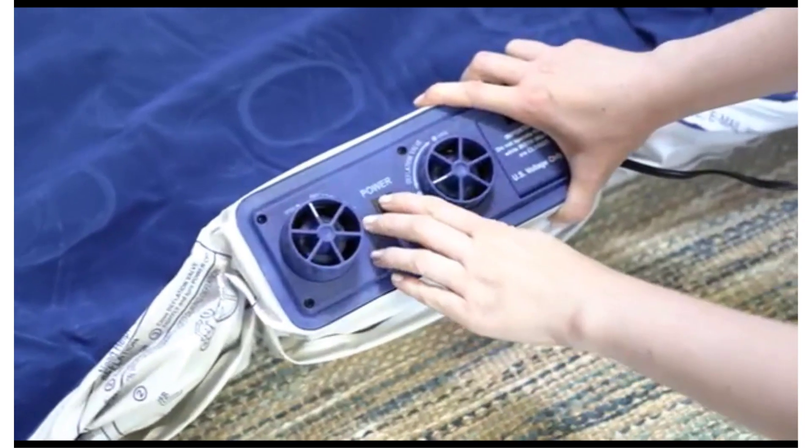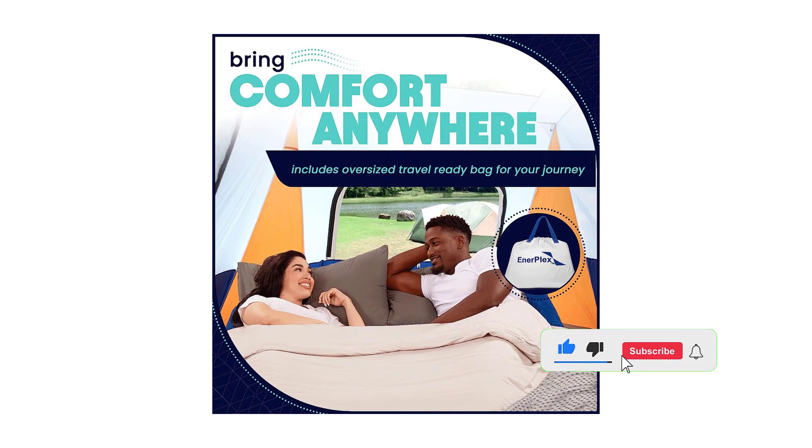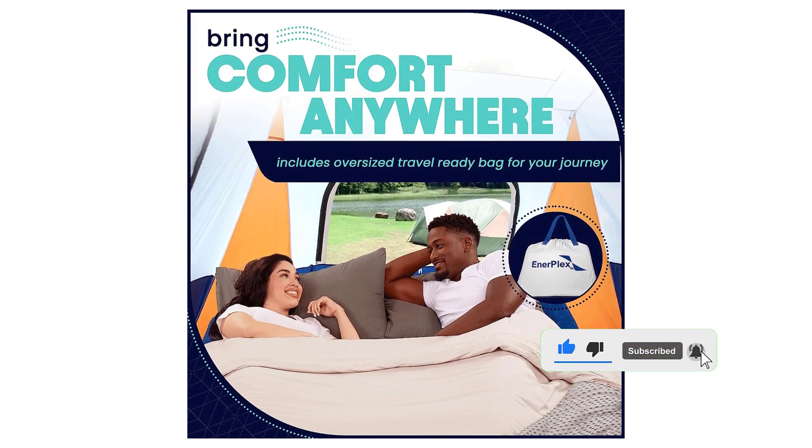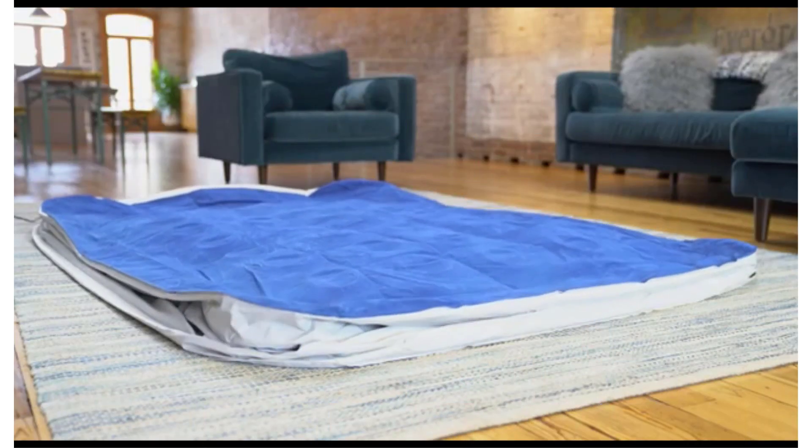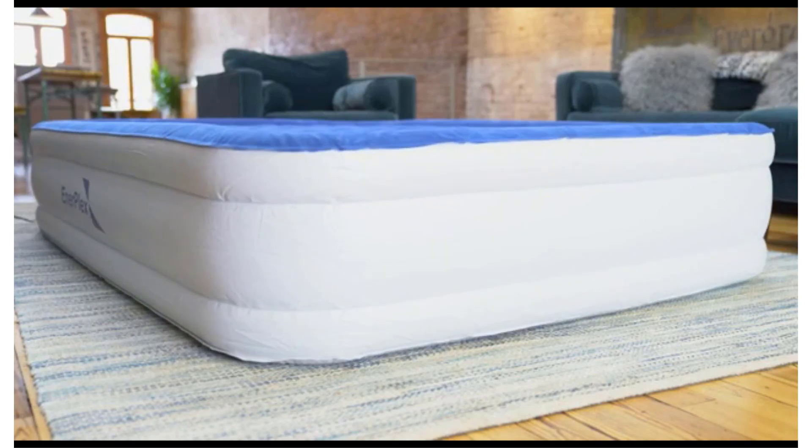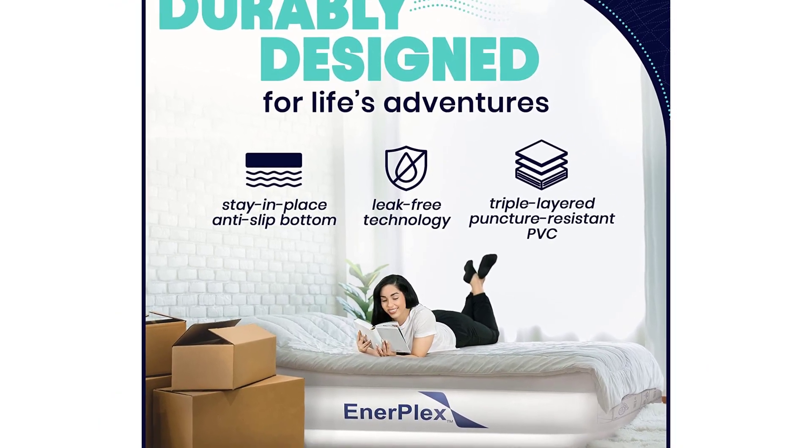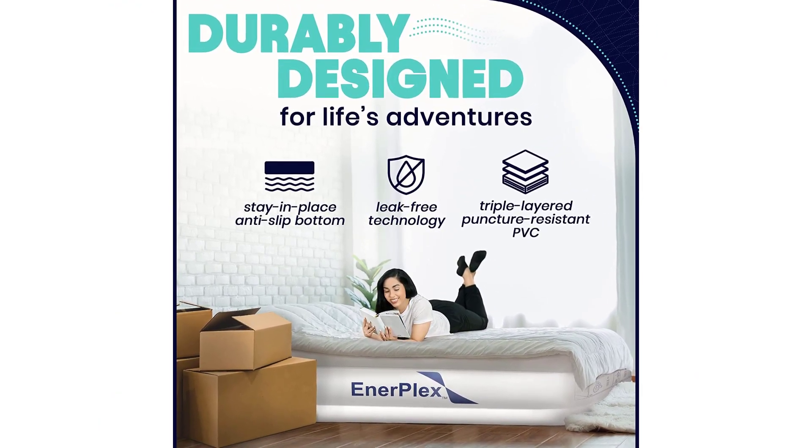To set up the mattress, you plug it in, turn the inflation valve knob to the on position, and click the power button. Once it is inflated, the mattress can be unplugged and moved from one room to another. To deflate it, the mattress has to be plugged in again with the inflation valve in the closed position and the deflation valve open—just click the power button and the air will be pushed out. Once it is fully deflated, it folds up neatly into the included storage bag, which is roughly the size of a carry-on suitcase.